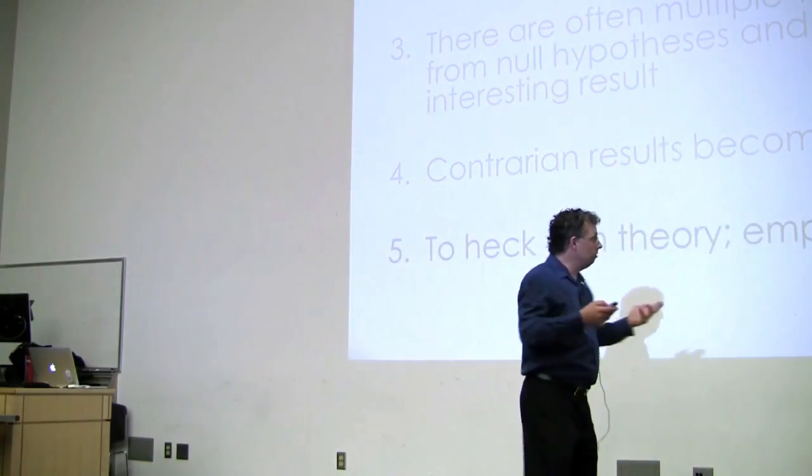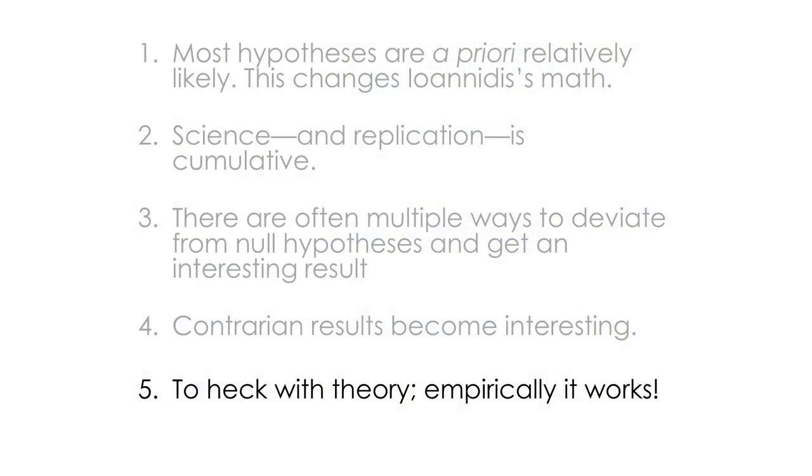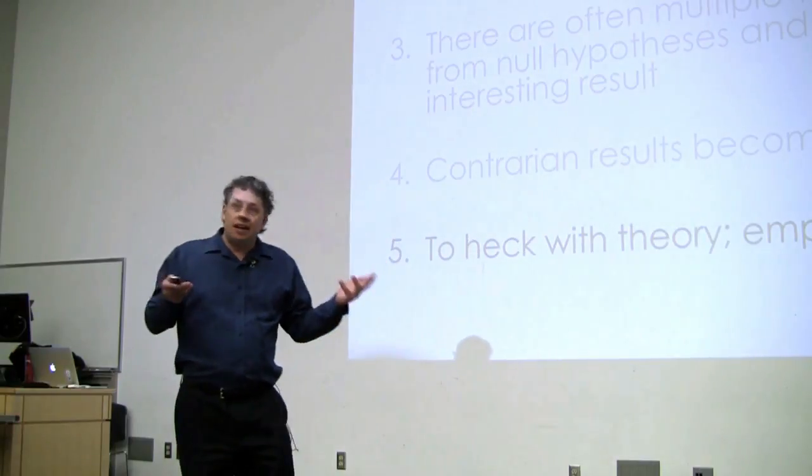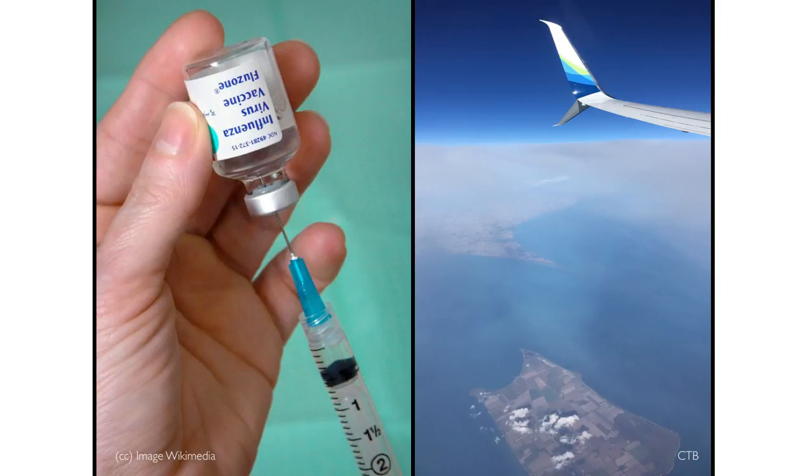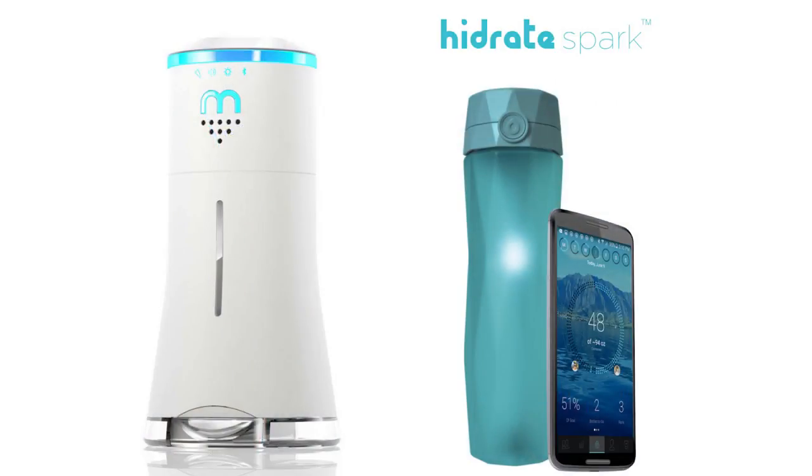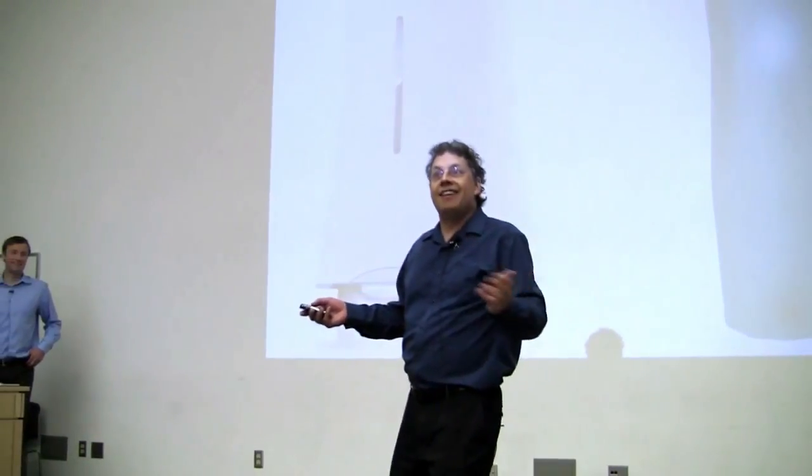And then finally, look, to heck with all of this theory. Empirically, science works. Science just bloody works. And that's one of the most important things, right? I mean, as we said at the start, science gives us these lifesaving vaccines. Science lets us fly across the country at 500 miles per hour. And you guys are lucky enough to live in an era where you can go online. You can order a Bluetooth salt shaker or a water bottle that will remind you that you're thirsty. And what could possibly be better than that? Thank you.